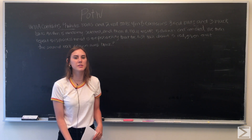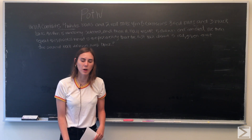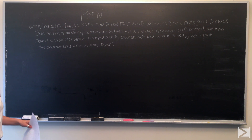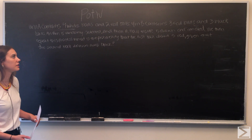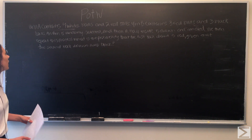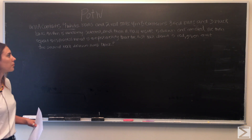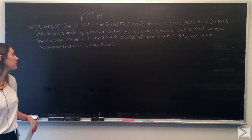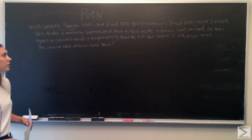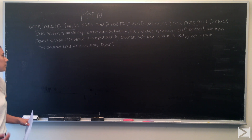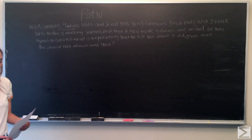Welcome to the World Wide Center of Maths Problem of the Week. This week our problem is: Urn A contains four white balls and two red balls. Urn B contains three red balls and three black balls. An urn is randomly selected and then a ball is drawn out and removed. We then repeat this process. What is the probability that the first ball drawn is red, given that the second ball drawn was black?